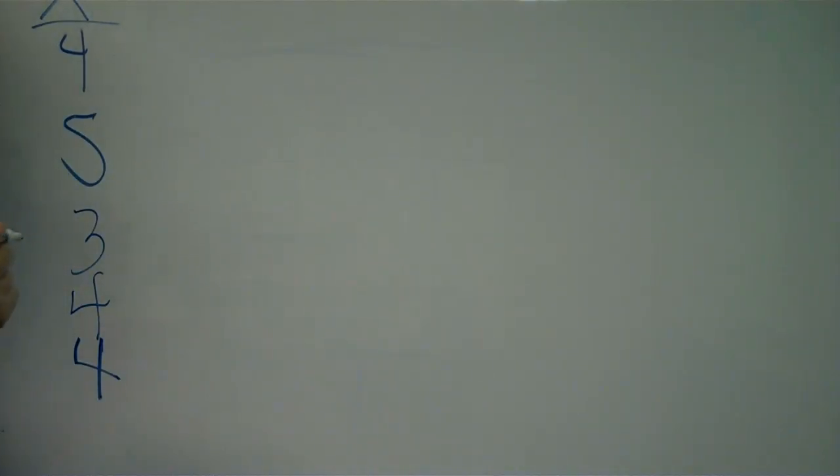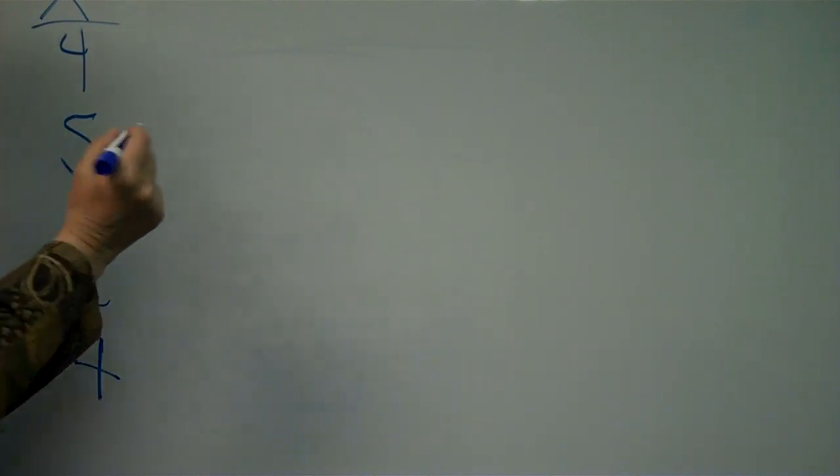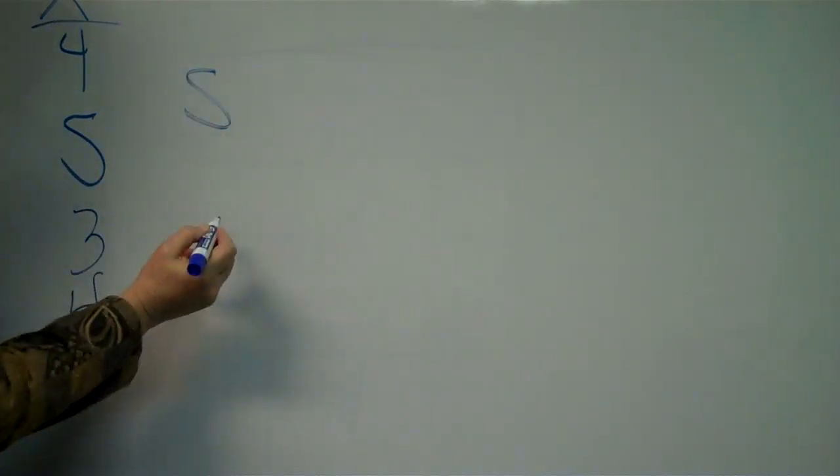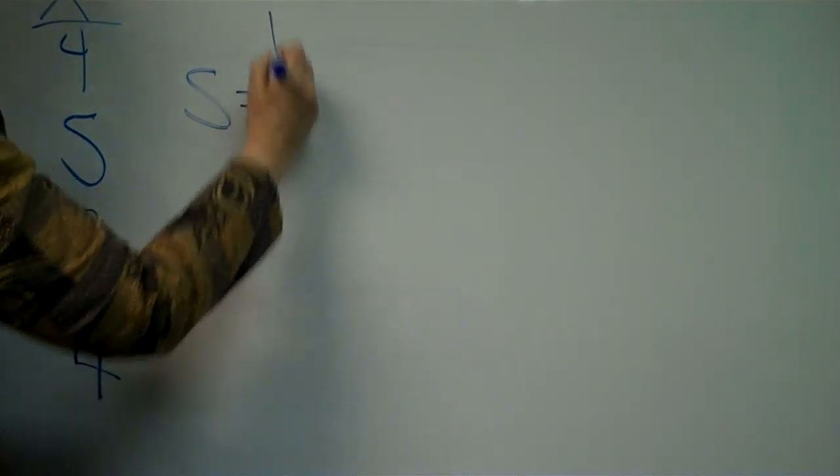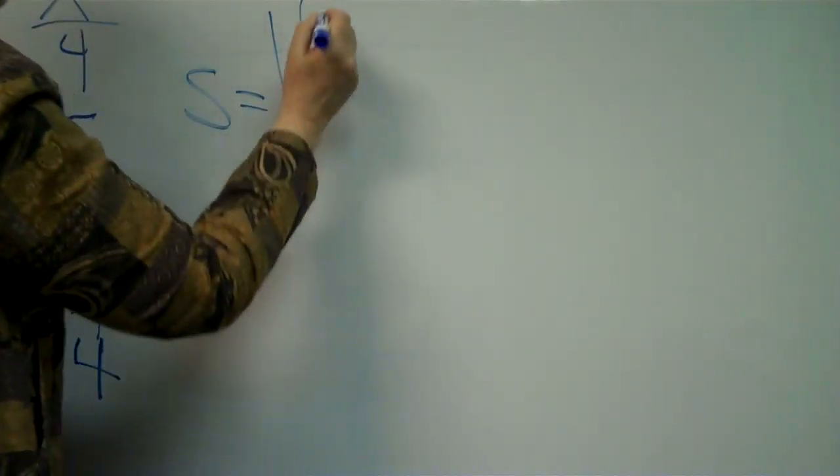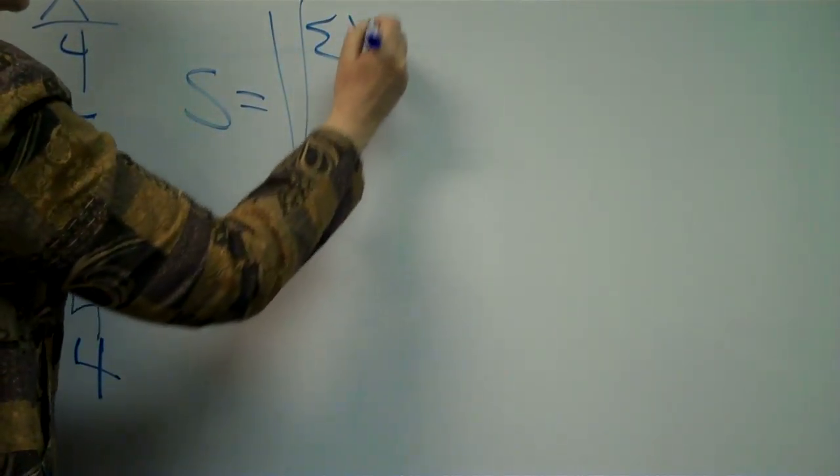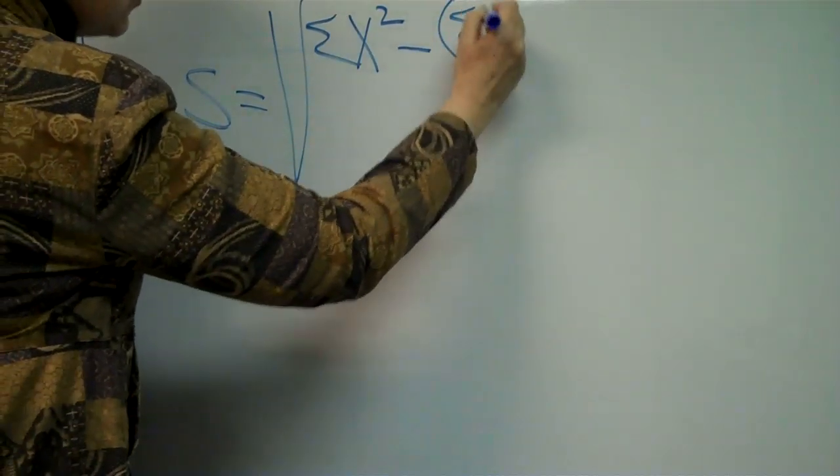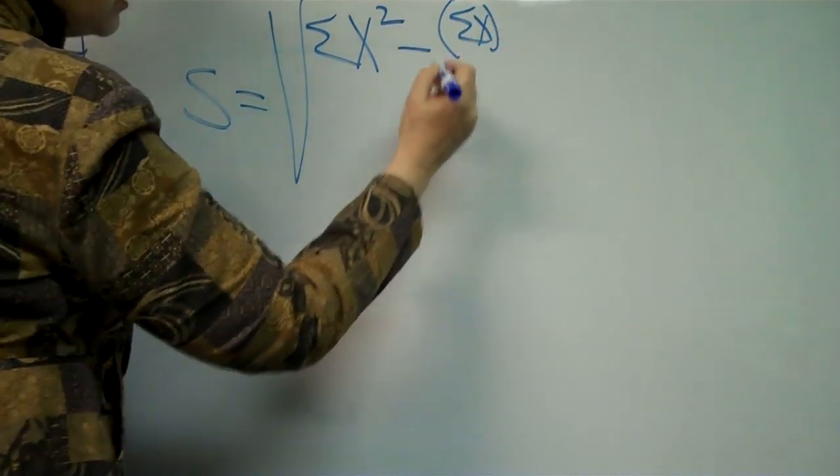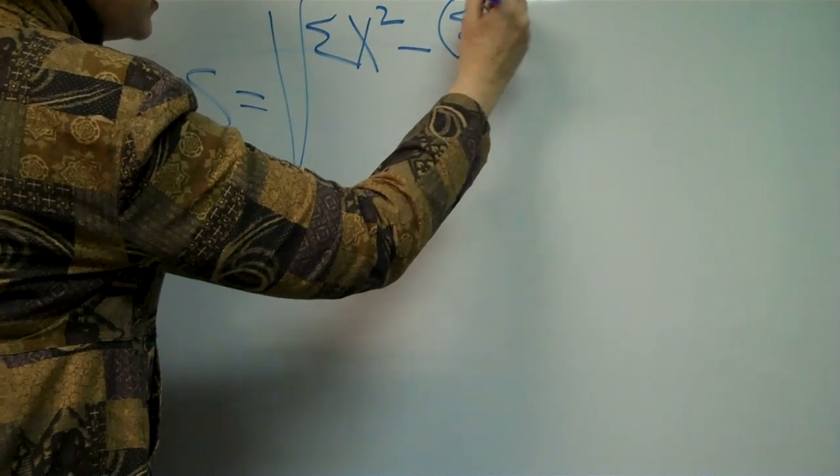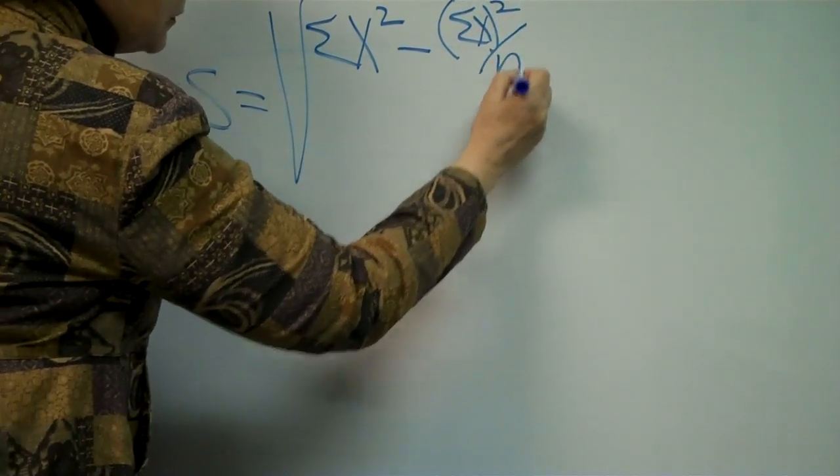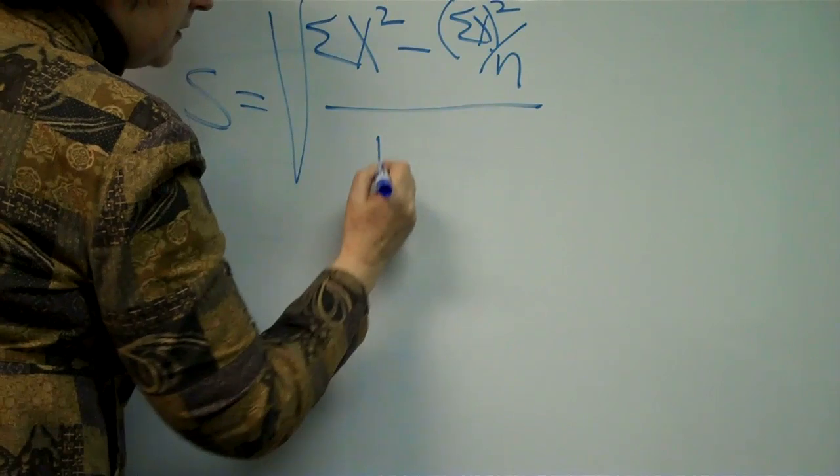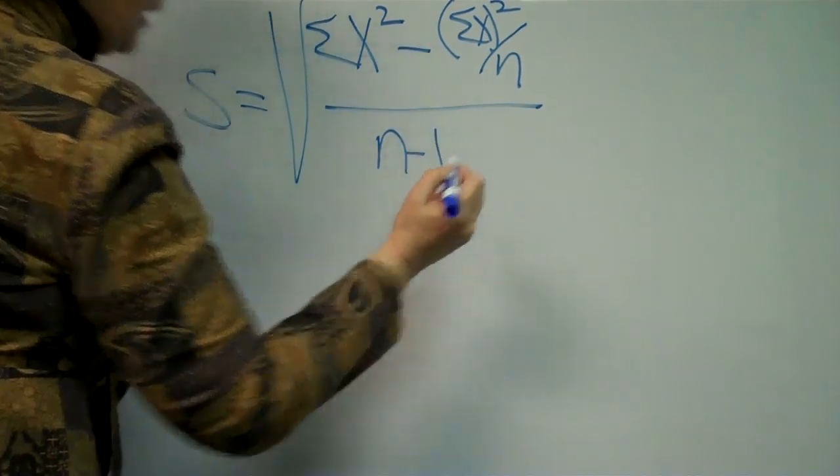This is the way to calculate the standard deviation using the computational formula. Standard deviation S equals the square root of the sum of the raw scores squared minus the sum of the raw scores, all of them added up first and then squared, divided by the number of raw scores, all of that divided by the number of scores minus 1.